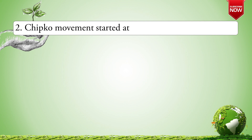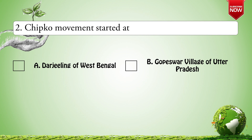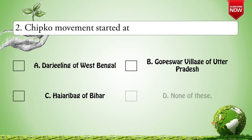Next question: The Chipko Movement started at — Options are: A. Darjeeling of West Bengal; B. Gopeshwar village of Uttar Pradesh; C. Hazaribag of Bihar; D. None of these. The correct option is B: Gopeshwar village of Uttar Pradesh.